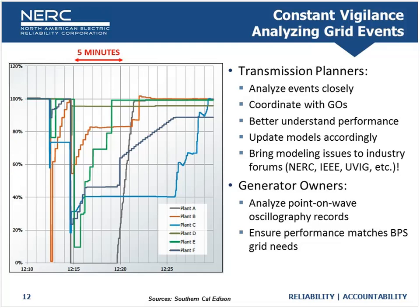Here you can see two different events that happened about two minutes apart — first at 230 kV, one at 500 kV. The plants responded very differently. Note that these are one-minute divisions, so this is a long period of time for our dynamics realm. You can see capturing momentary cessation here — this plant went near zero output instantaneously and came back. Others are seeing ramped responses back over a period of minutes, and we're looking very closely at why these plants are performing that way.